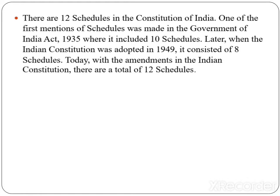There are 12 schedules in the Indian constitution. One of the first mentions of schedules was made in the Government of India Act 1935, where it included 10 schedules. Later when the Indian constitution was adopted in 1949, it consisted of 8 schedules, and today with amendments to the Indian constitution there are a total of 12 schedules.